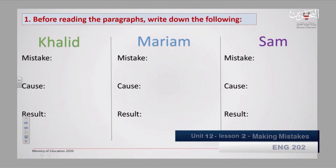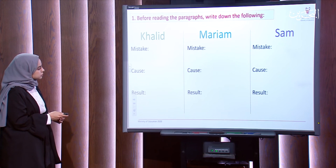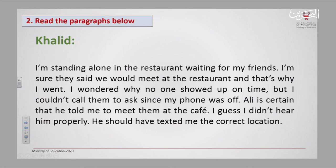Write the following three names: Khaled, Mariam, and Sam — and the columns: Mistake, Cause, and Result. I'll give you some time to write it. Now let us move to Khaled's paragraph. I'll read it for you first, then we'll try to extract the main things. 'I'm standing alone in the restaurant waiting for my friends. I was sure they said we would meet at the restaurant, and that's why I went. I wondered why no one showed up on time, but I couldn't call them since my phone was off. Ali is certain that he told me to meet them at the cafe. I guess I didn't hear him properly. He should have texted me the correct location.'